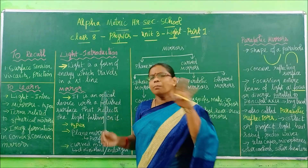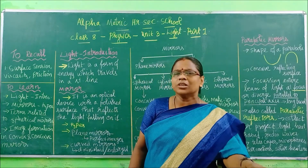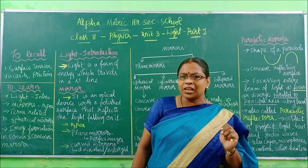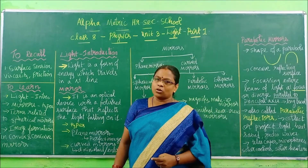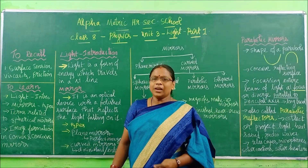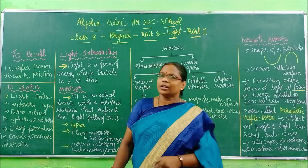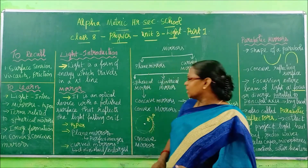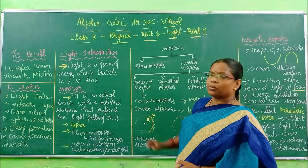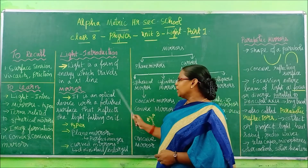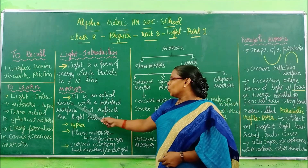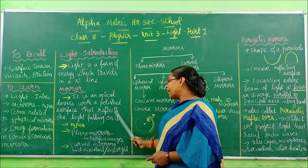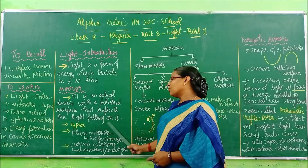There are so many instruments which work on the principle of light traveling in a straight line and also use light. One very important instrument is the mirror. The definition for mirror is: it is an optical device with a polished surface that reflects the light falling on it.